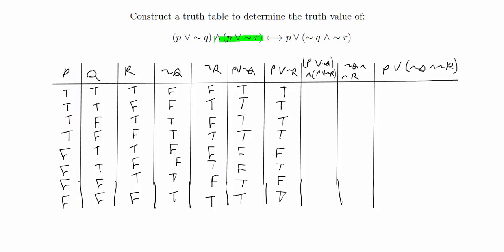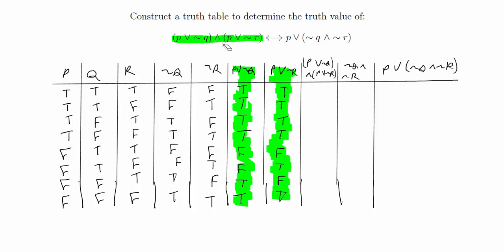The next column is the full left-hand side statement, which combines P∨¬Q and P∨¬R with AND. Both columns have to be true for the whole statement to be true; if one is false, the whole statement is false. The first four rows are both true, so they give true, true, true, true. Then we have false because P∨¬Q is false, then true because both are true, giving: true, true, true, true, false, false, true, true — and we're done with the left-hand side.